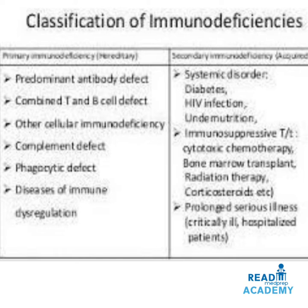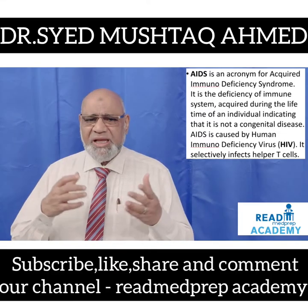Primary immunodeficiency is basically due to hereditary factors, whereas secondary immunodeficiency is due to acquired factors. The different types of primary immunodeficiency diseases include predominant antibody defect, combined T and B cell defect, complement defect, phagocytic defect, and diseases of immune dysregulation. Secondary immunodeficiency may be caused by systemic disorders like diabetes, HIV infection, under-nutrition, cytotoxic chemotherapy, bone marrow transplant, radiation therapy, corticosteroid therapy, and prolonged critical illness.